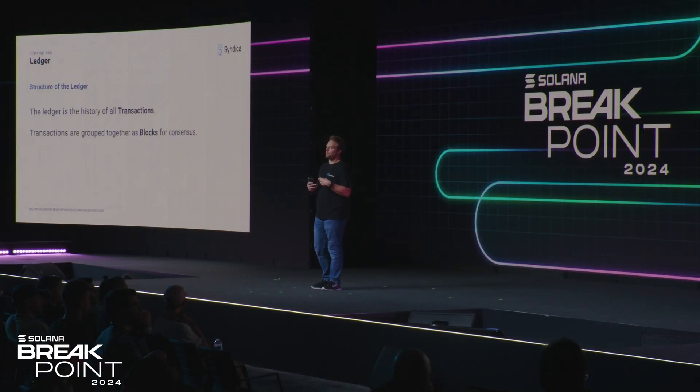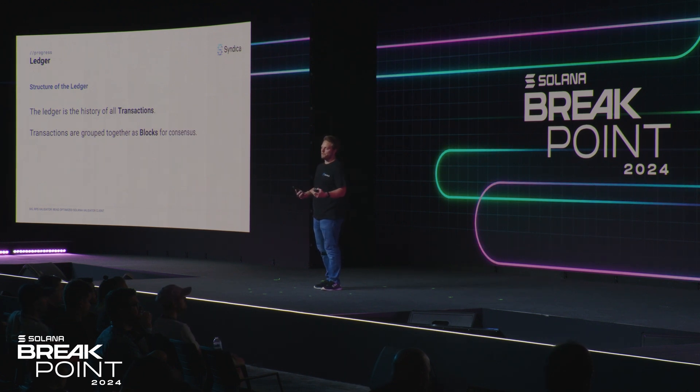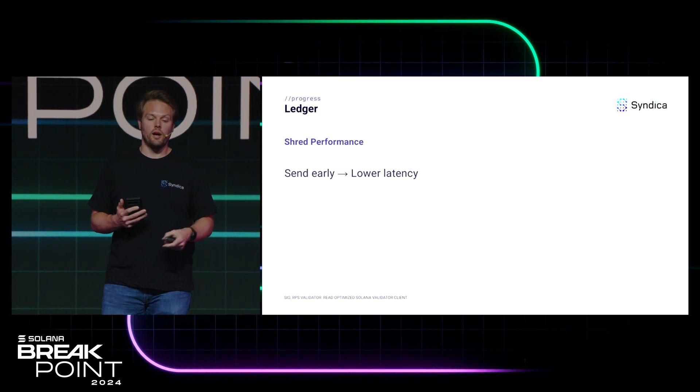The ledger is the history of all transactions. To facilitate consensus in a blockchain system, you need to group transactions in large groups called blocks. But this introduces a latency problem — transactions can't be processed until the whole block is available. Solana solves this by dividing the block into smaller pieces called shreds. This is a major reason why Solana is able to be as fast as it is — for example, the block producer can start sending out shreds early before it's even figured out what the entire block is going to look like.